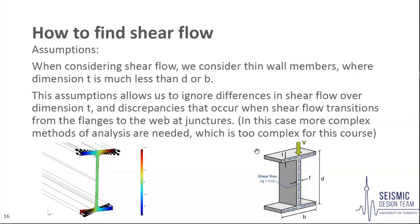When we consider shear flow, we consider it for thin-walled elements, and this allows us to make a few important assumptions about how shear flow travels along juncture points. A thin-walled element is one where t is much less than d or b. These assumptions allow us to ignore differences in shear flow along dimension t and smoothly transition over juncture points, such as from flanges to a web. Without these assumptions, the shear flow formula would not be valid along the element's thickness and at juncture points, and we would need a complex mathematical analysis.